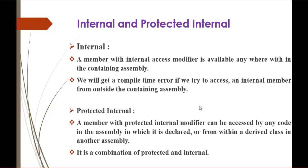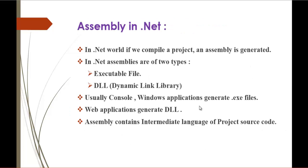To understand what an assembly is, I have a slide for that. Assembly in .NET: when you compile a project, an assembly is generated. In .NET, assemblies are of two types — executable file (.exe) and DLL. If you use a console application or a Windows application, you get an .exe file. If you use a web application or a class library, you get a DLL, which is a dynamic link library. An assembly contains intermediate language — IL or MSIL, Microsoft Intermediate Language — of the project source code.